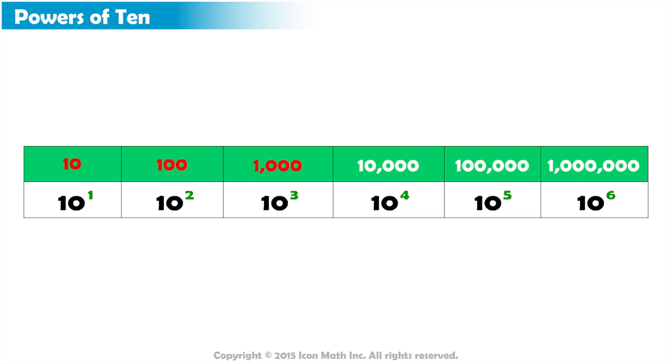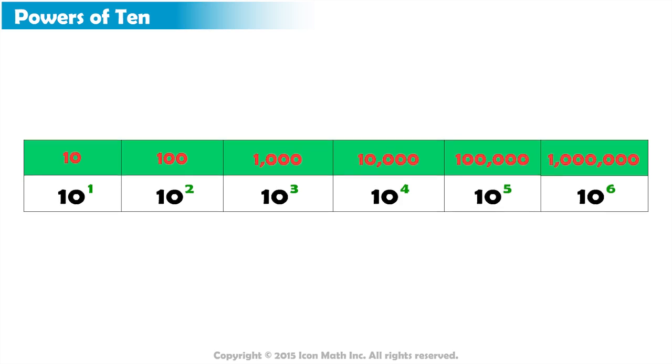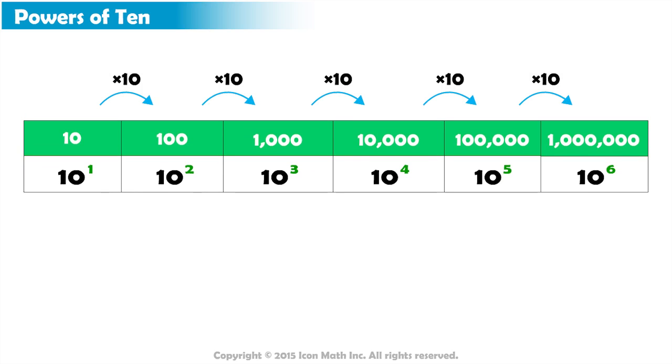Finally, notice how every power of 10 is 10 times larger than the power that comes before it. For example, multiplying 10 to the power 2 or 100 by 10 will give us 1000, which is 10 to the power 3. Also, 10 to the power 5 or 100,000 multiplied by 10 will give us 1,000,000 or 10 to the power 6.